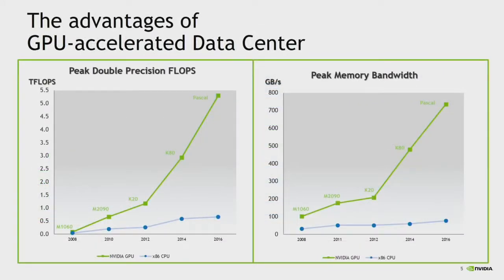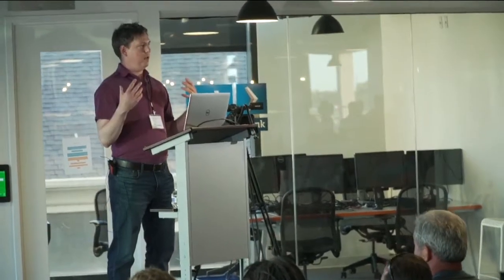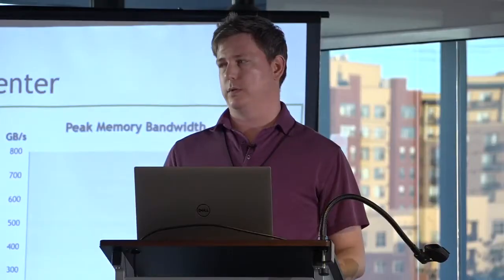Looking at these curves — these are the speed-ups year-over-year of GPUs compared to CPUs. What's interesting is that the blue CPU curve has leveled off, while the green GPU curve is still increasing at an exponential rate. If you think about how much data is increasing year-over-year, that more closely resembles the green curve.